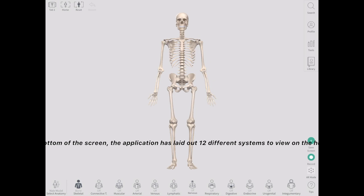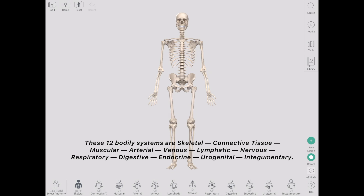Along the bottom of the screen, the application has laid out 12 different systems to view on the human figure. These 12 bodily systems are skeletal, connective tissue, muscular, arterial, venous, lymphatic, nervous, respiratory, and digestive.